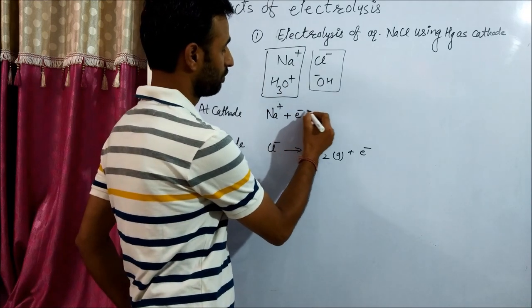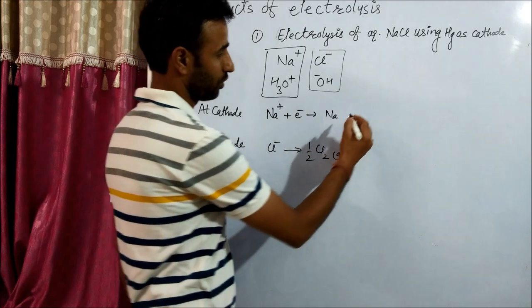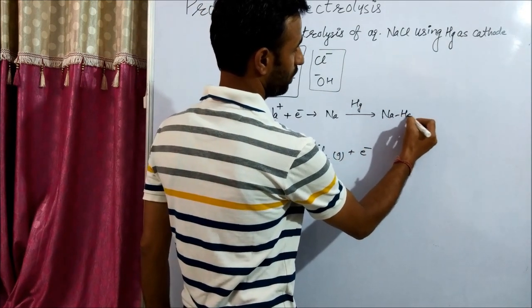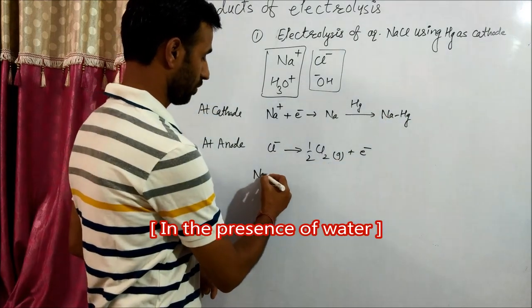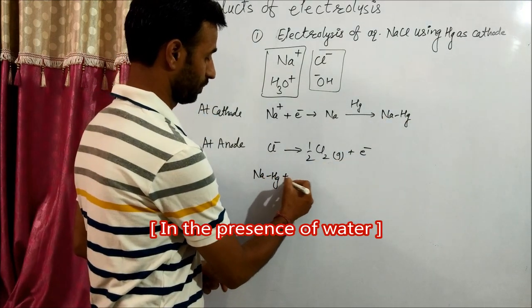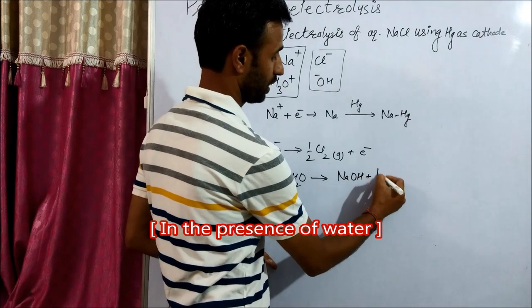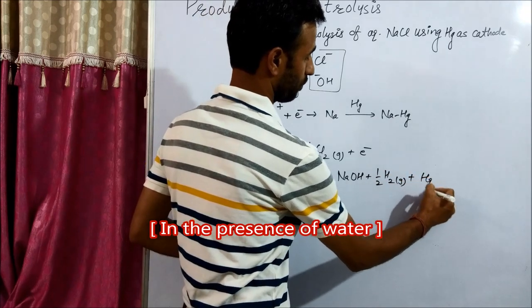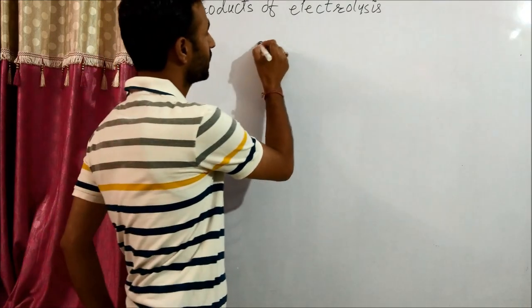And sodium will gain electron to give sodium. And in the presence of mercury it forms sodium amalgam. Sodium amalgam in aqueous solution gives sodium hydroxide, half of H2 gas and mercury. In case of dilute NaCl...